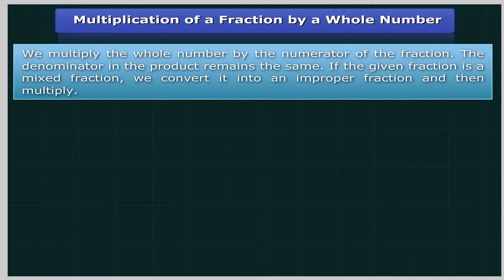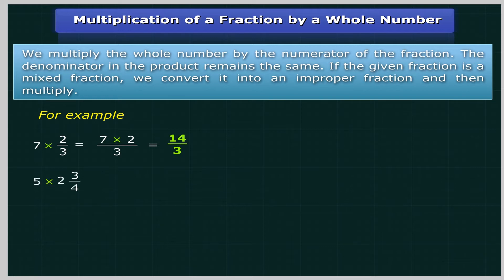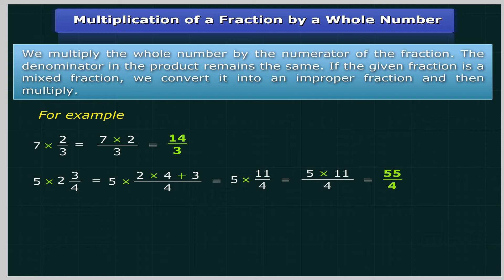When a fraction is a mixed fraction, we convert it into an improper fraction and then multiply. For example, 7 multiplied by 2 upon 3 equals 14 upon 3. And 5 multiplied by 2¾ equals 5 multiplied by (2×4 plus 3) upon 4, which equals 5 multiplied by 11 upon 4, which equals 55 upon 4.